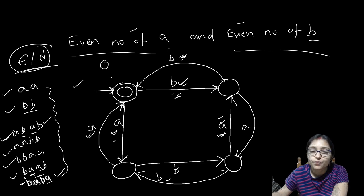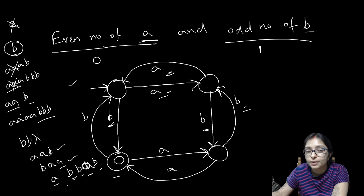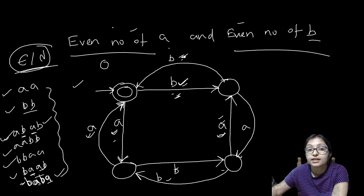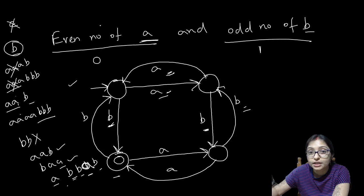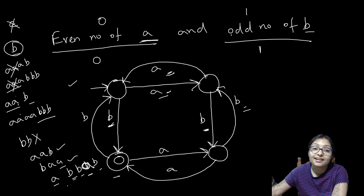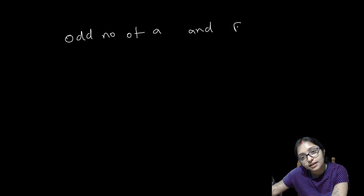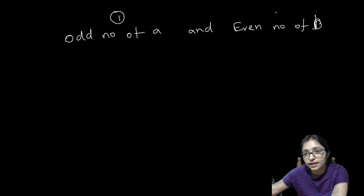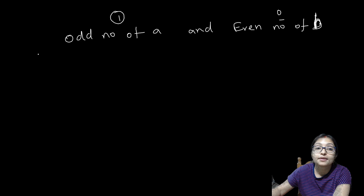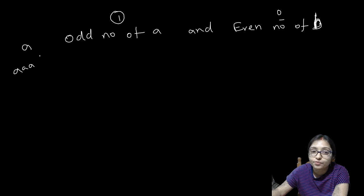Just watch till the end. Now next one: we have done even-even (0,0) and even-odd (0,1). Next combination is 1,0 — odd number of A and even number of B. Odd number of A means at least 1A should be there. Even number of B means 0. So at least 1A, and it can be 0B. After that it can be AAAA with 2B like this.